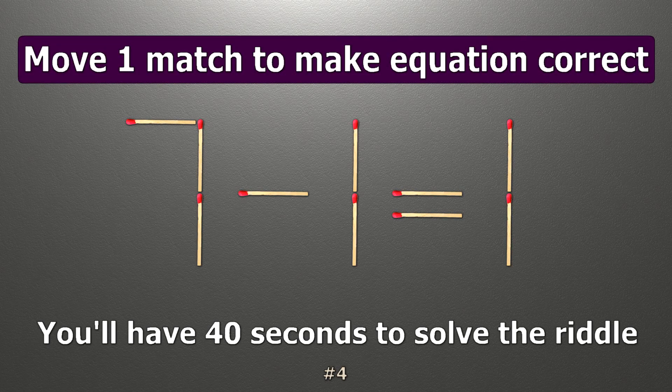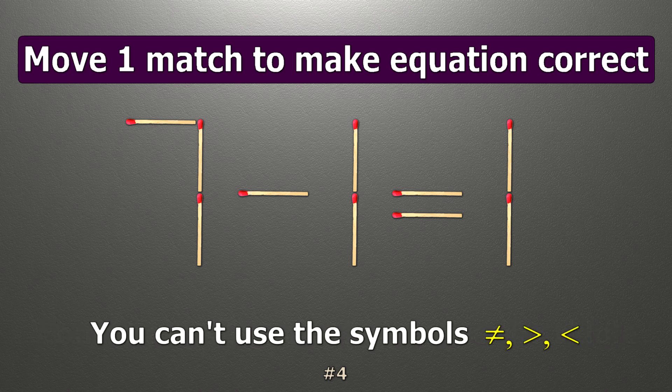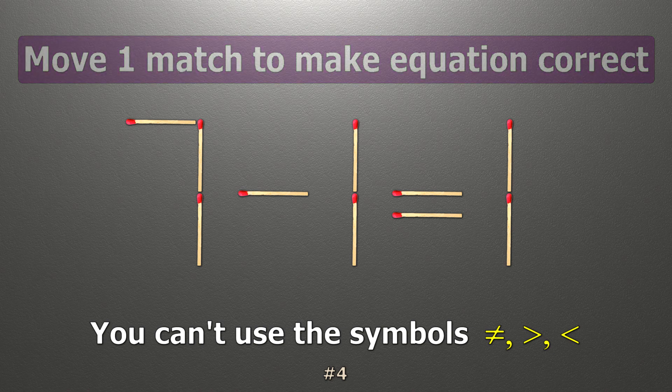We have the equality 7 minus 1 equals 1. Our equality is wrong. We need to move one match to make our equality correct.